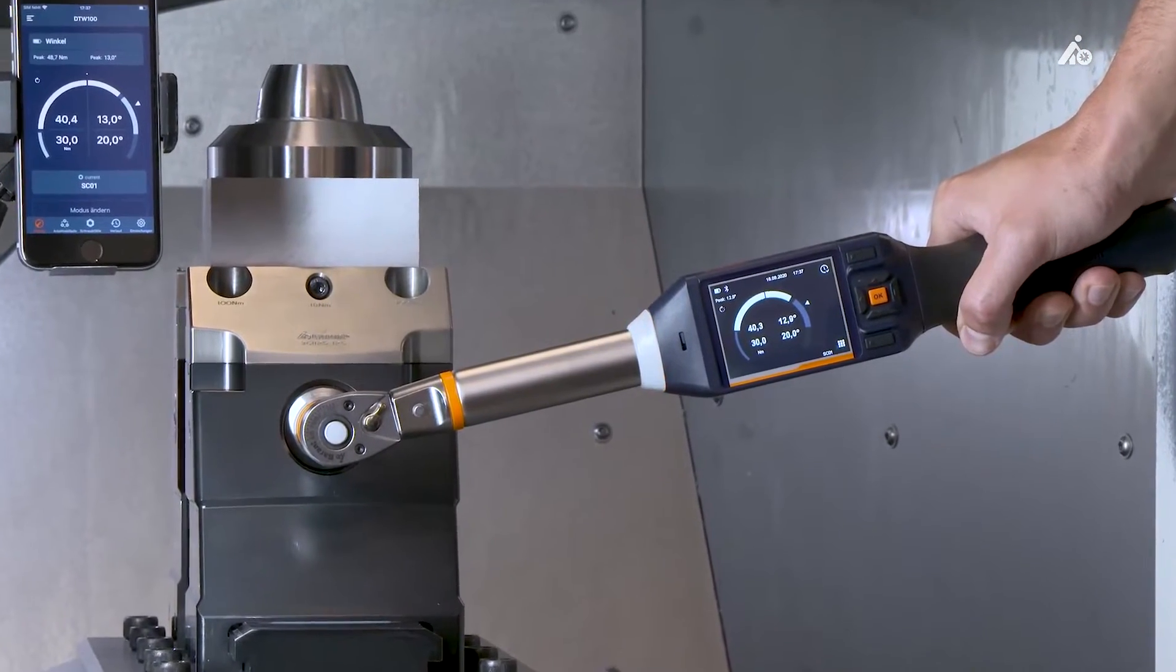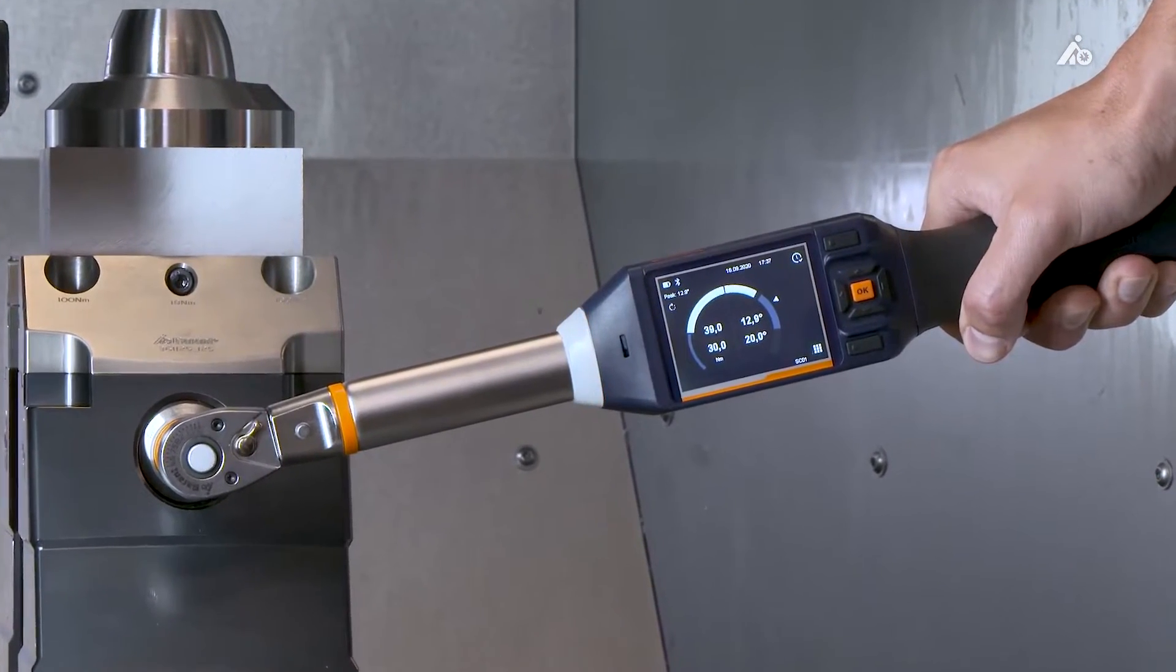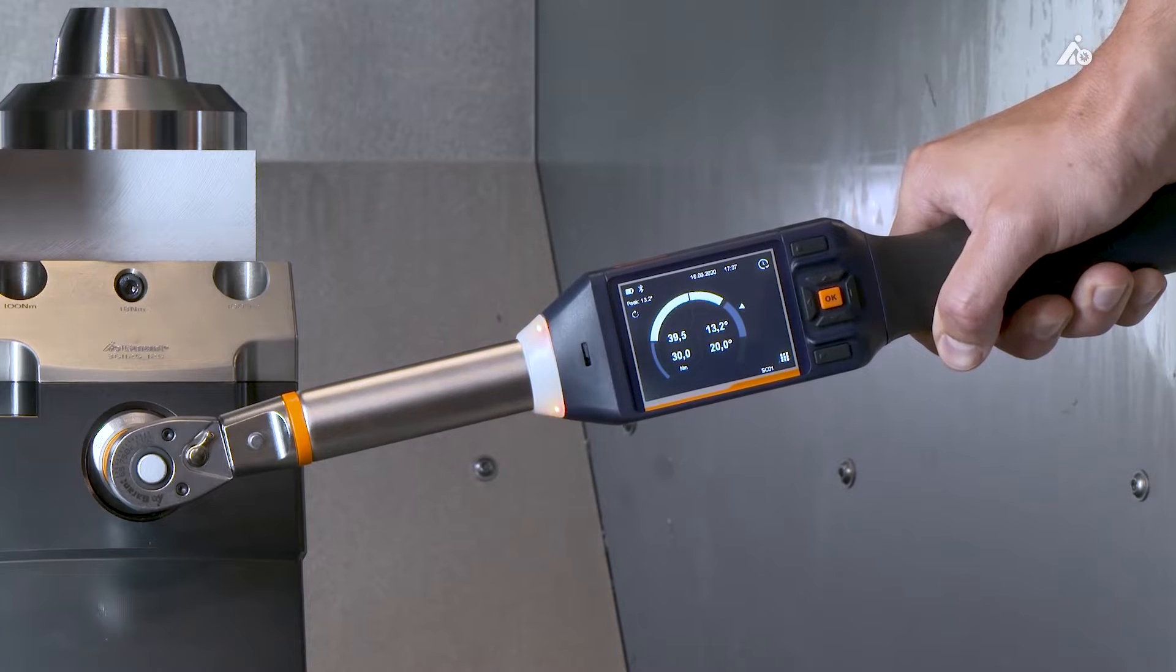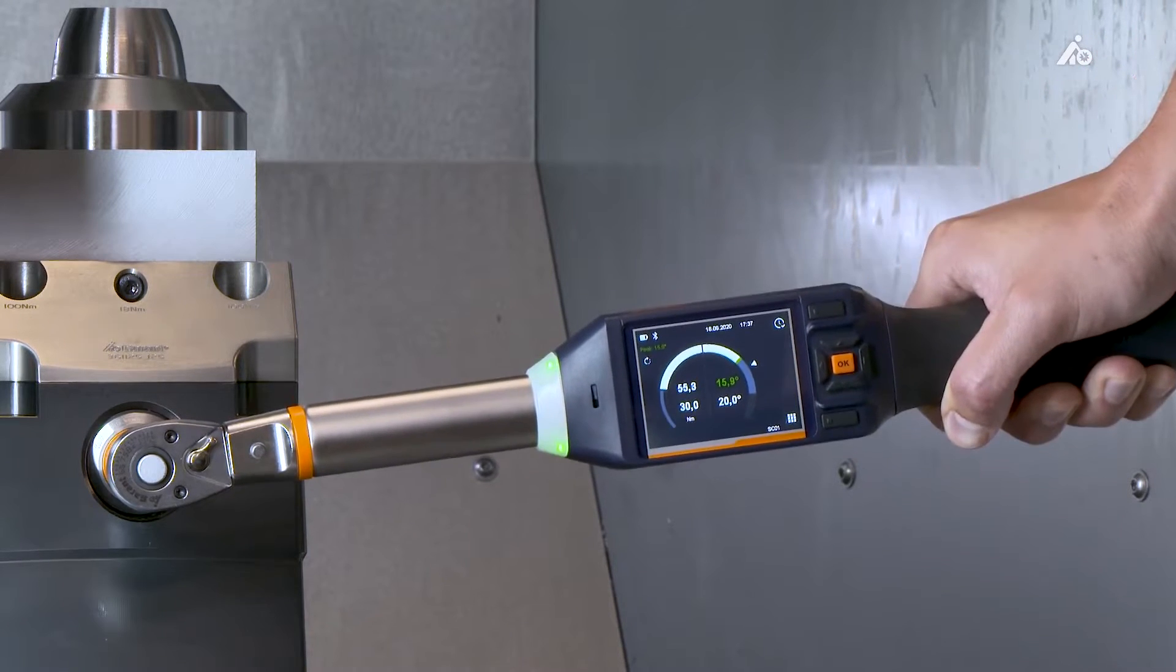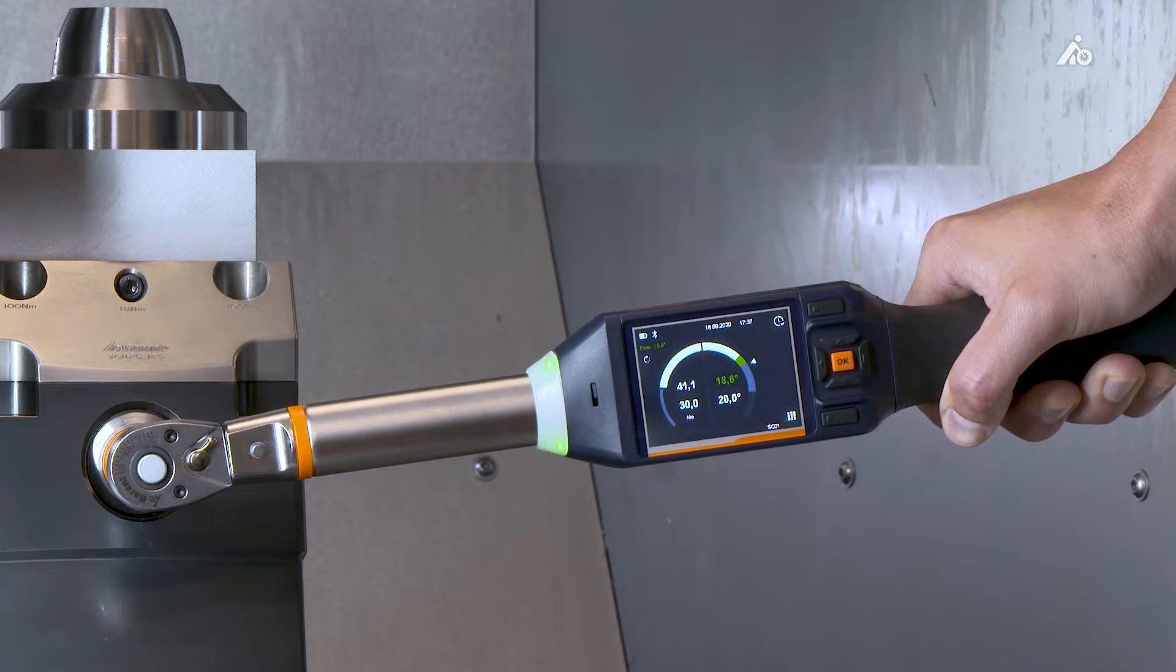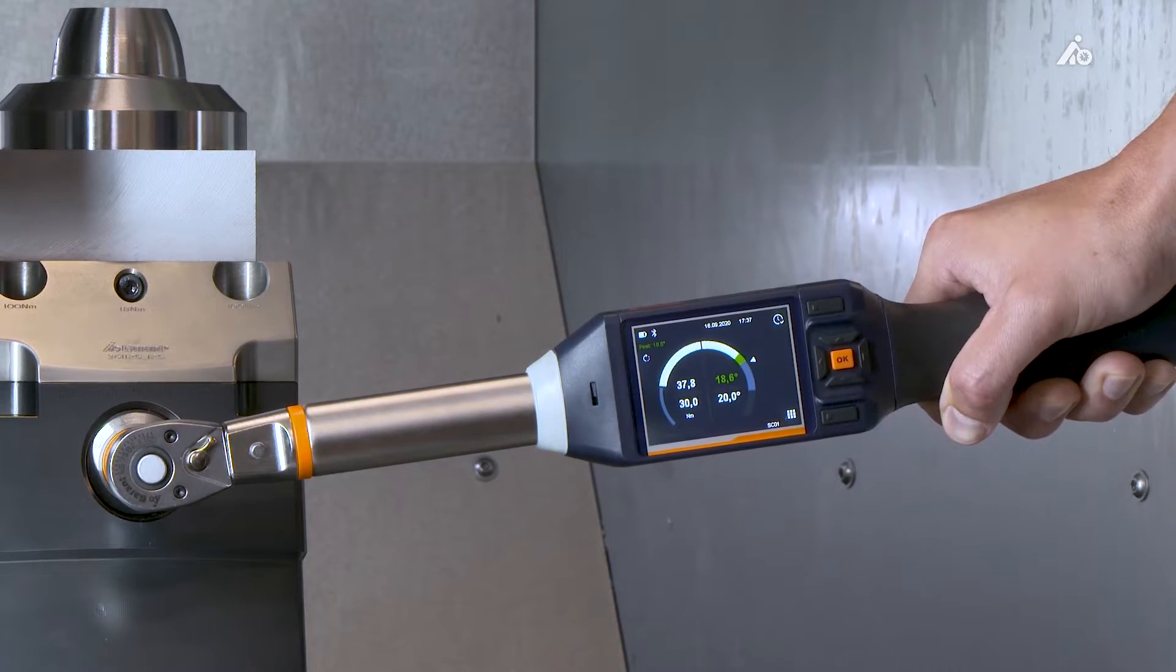Before reaching the target value, the LED flashes yellow, which is nice to see here. A warning is given here that the target value range is about to be reached. If you continue to tighten, the LED lights up green, the vibrating motor starts, and an acoustic signal is emitted.